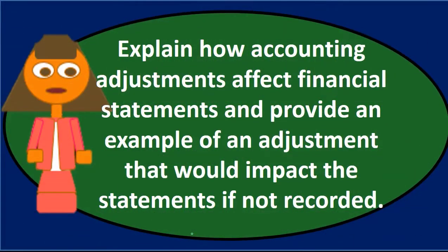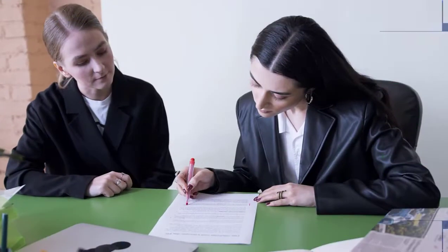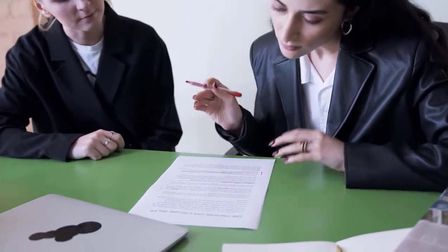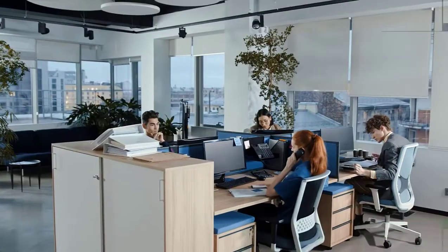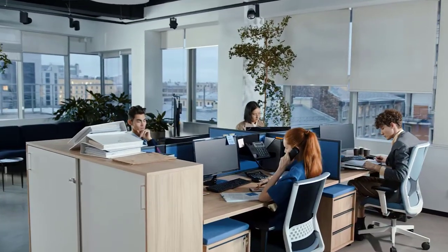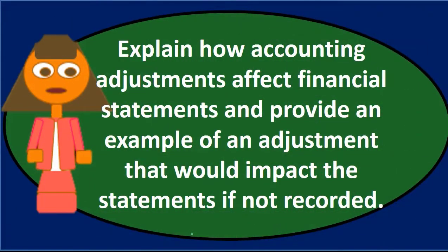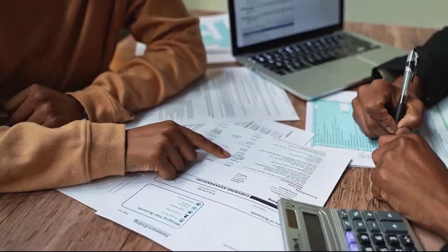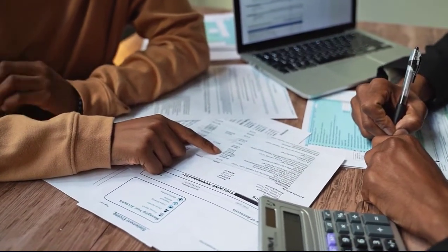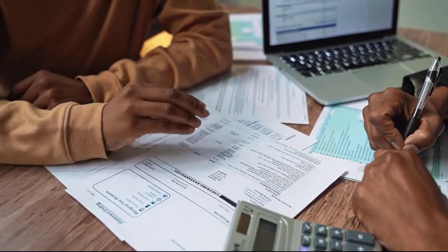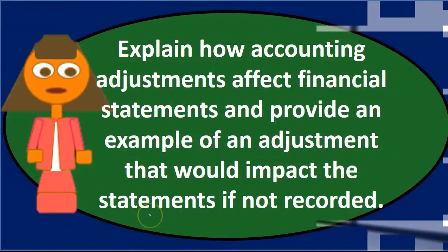The adjusting process is not necessarily correcting mistakes made by the accounting department. We set up the accounting department to run in a particular way, and there are some accounts that just need adjustments at the end of the time period. It's logistically the best way to merge effective accounting data input with having financial statements as accurate as possible at the cutoff date.